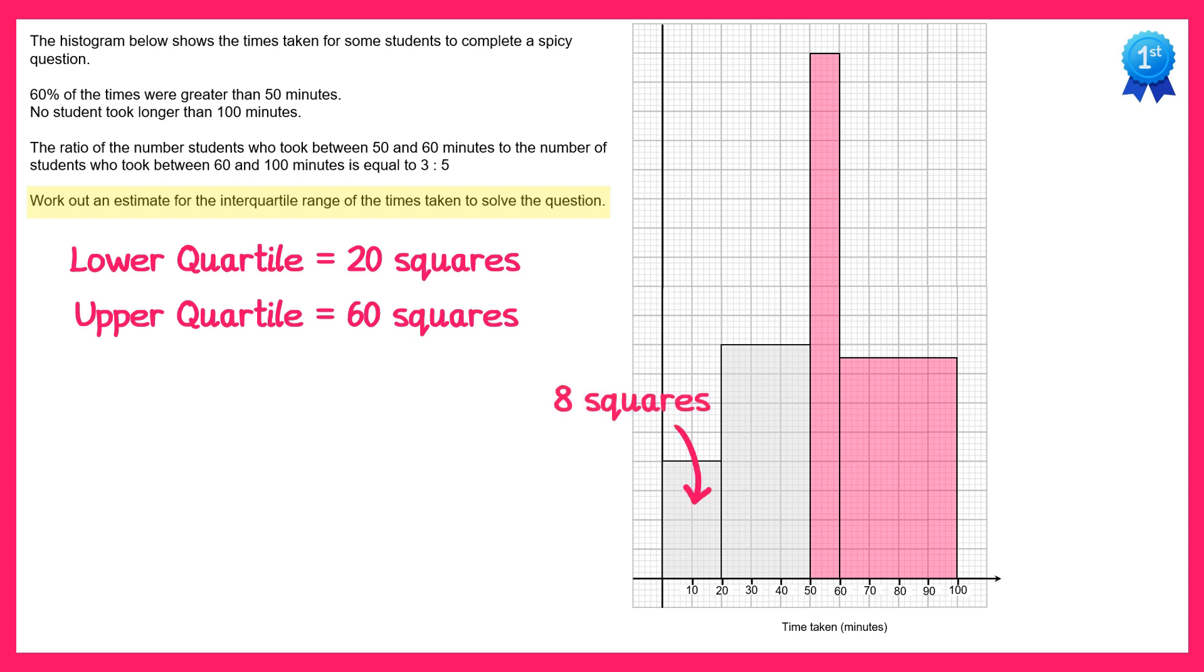The first bar here has 8 squares and we're trying to go 20 squares in, so we need 12 more squares from the next bar. The next bar is 24 squares and we only want 12 of them so we only want half of this bar. So we can split it right down the middle and we find the lower quartile is 35.